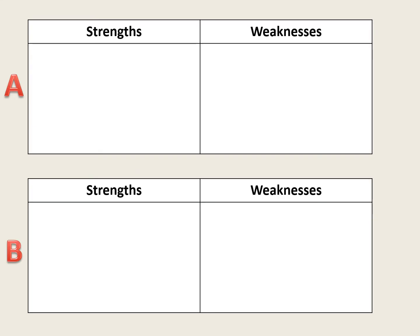You're going to need to draw two tables and label them A and B. They're both going to have strengths and weaknesses going across the top. And once you've drawn that, then move on to the next stage of the video.